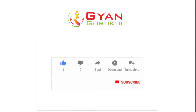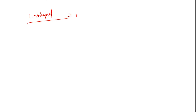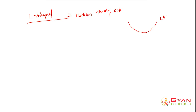Hello friends, welcome to Gyan Gurukoli classes. Today we are going to see why the long run average cost curve is an L-shaped curve in the modern theory of cost. In the conventional theory we learned that the long run average cost curve is a U-shaped curve, but in the modern theory the curve is not U-shaped — rather it looks like an L-shape.